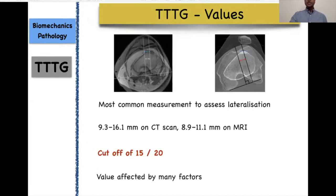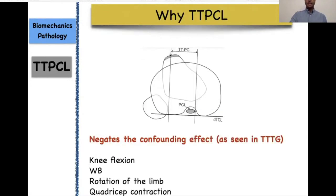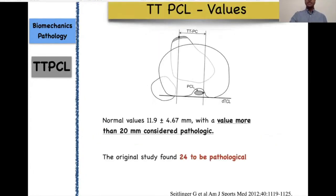The TTTG value can be affected by many factors. To negate the effect of trochlear dysplasia on TTTG, the TT-PCL distance was introduced, which reflects the deviation of the tibial tubercle position in relation to the tibia itself. Looking at the literature, the value considered pathologic is anywhere from 20 to 24 mm.